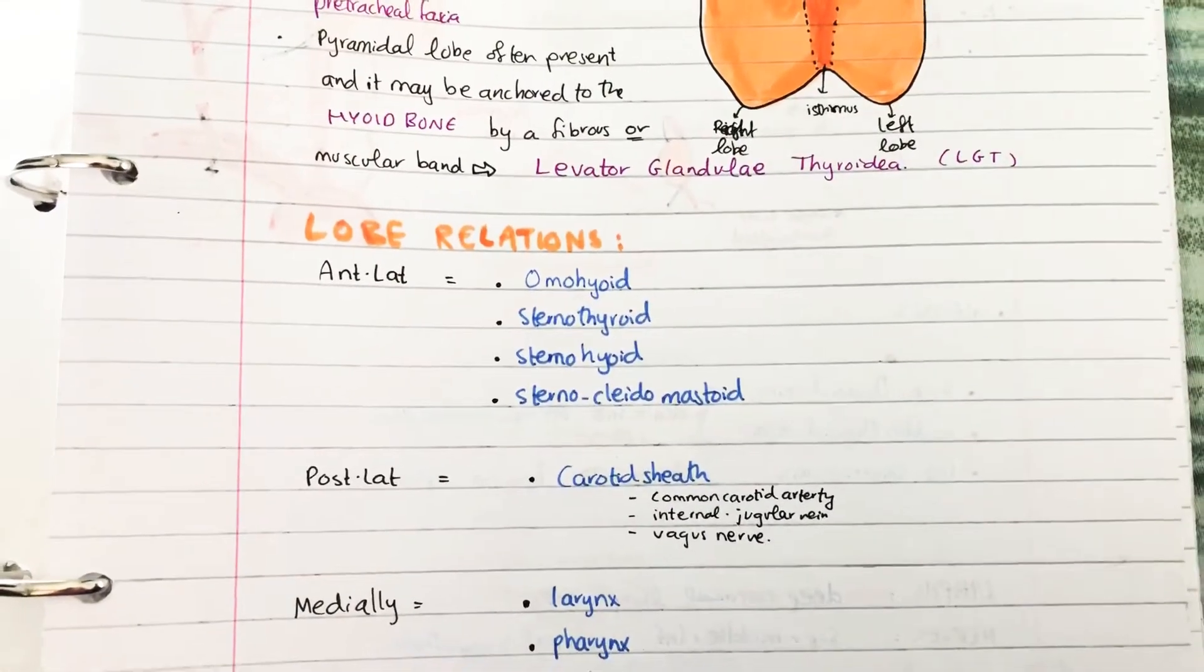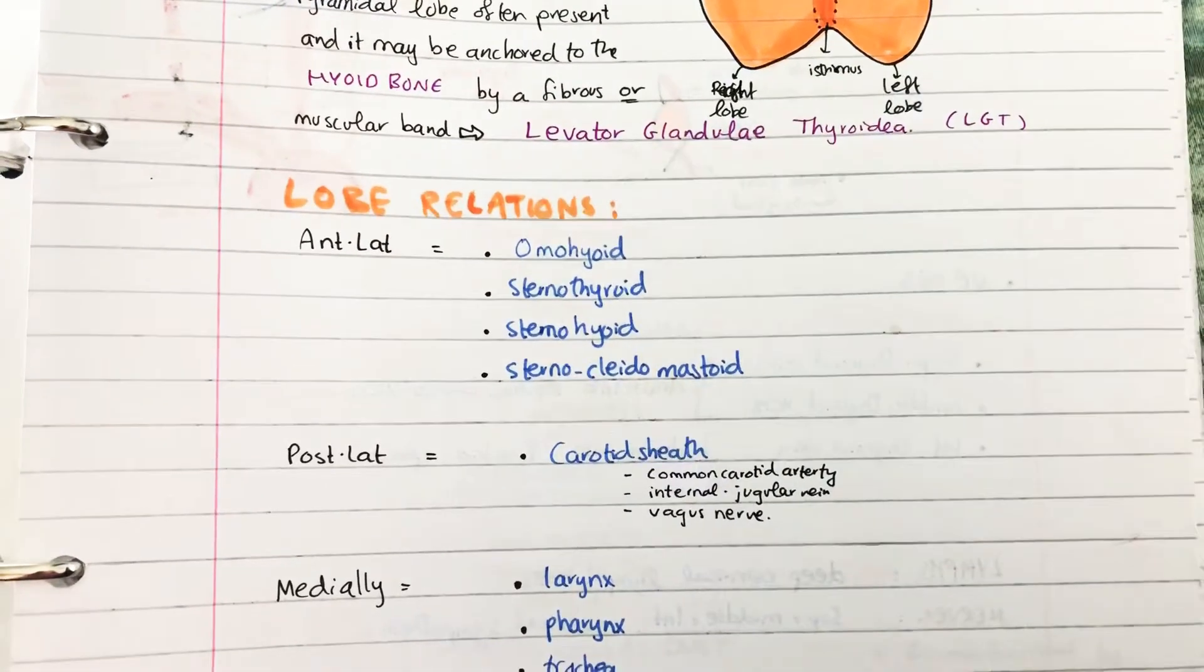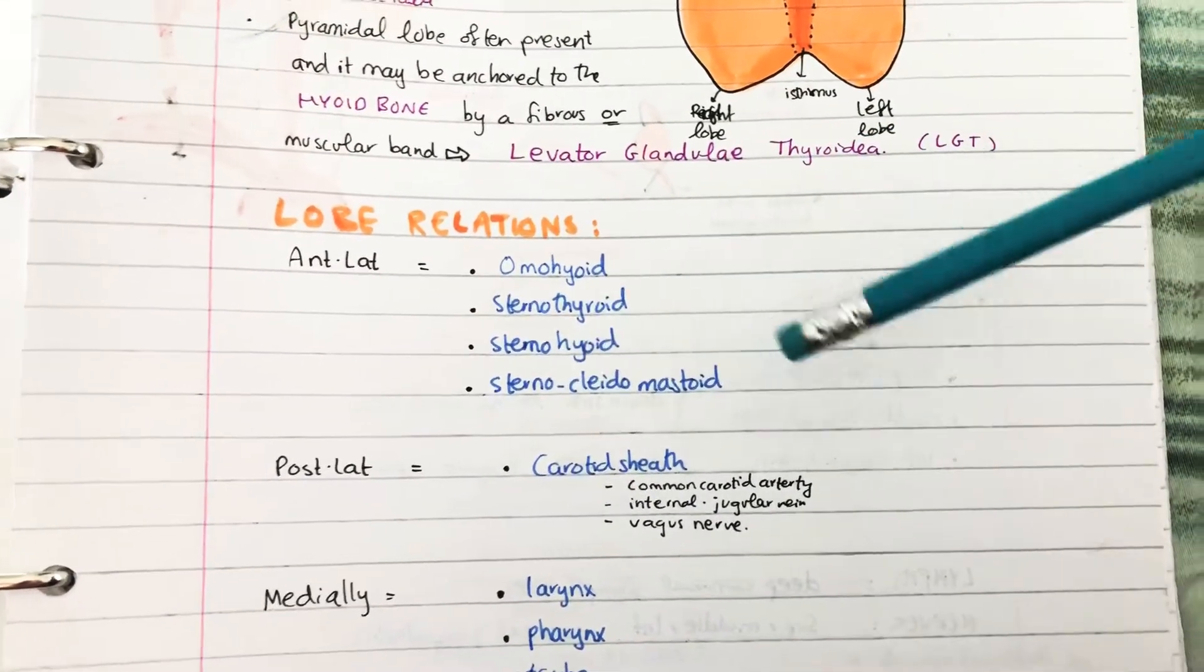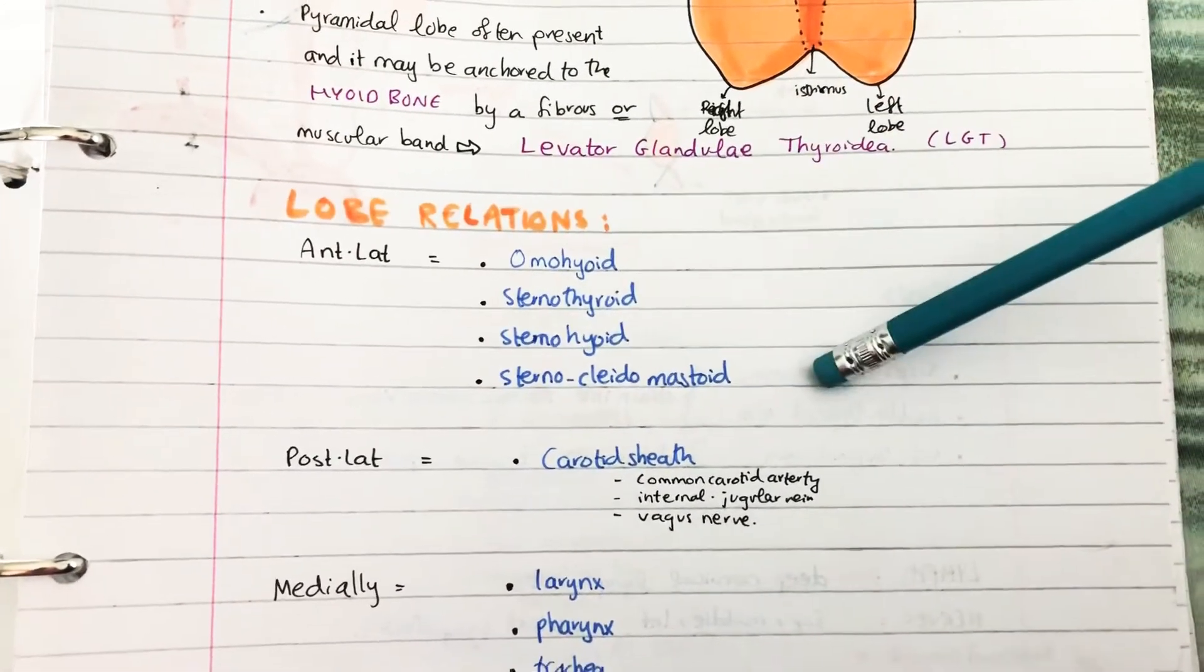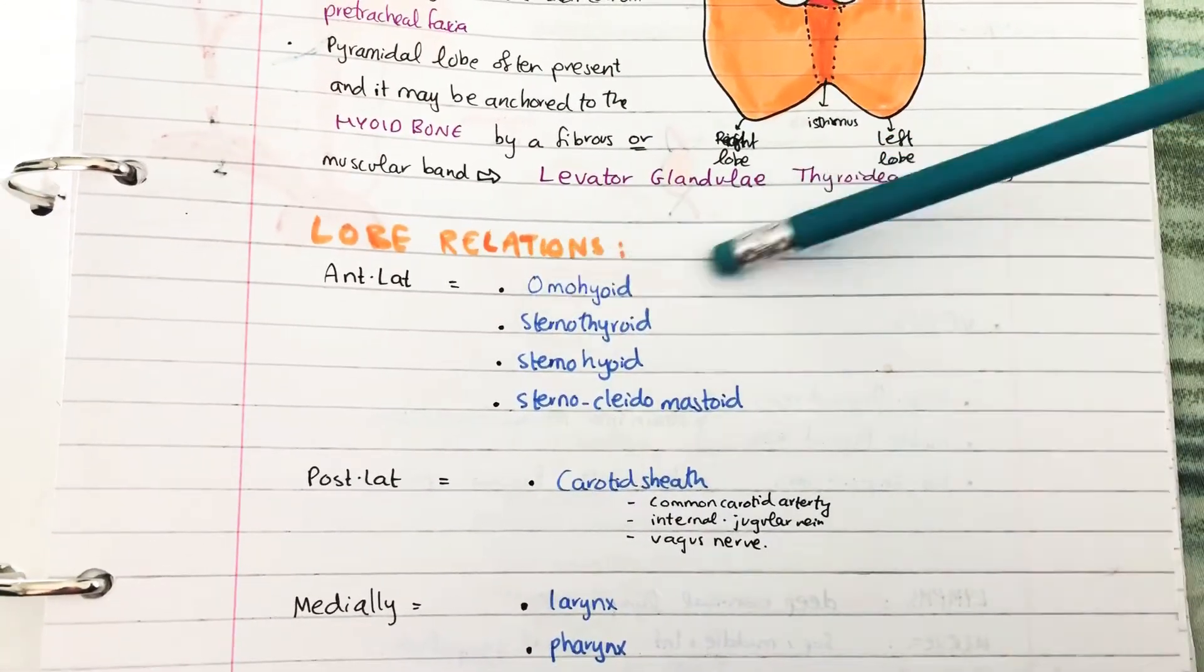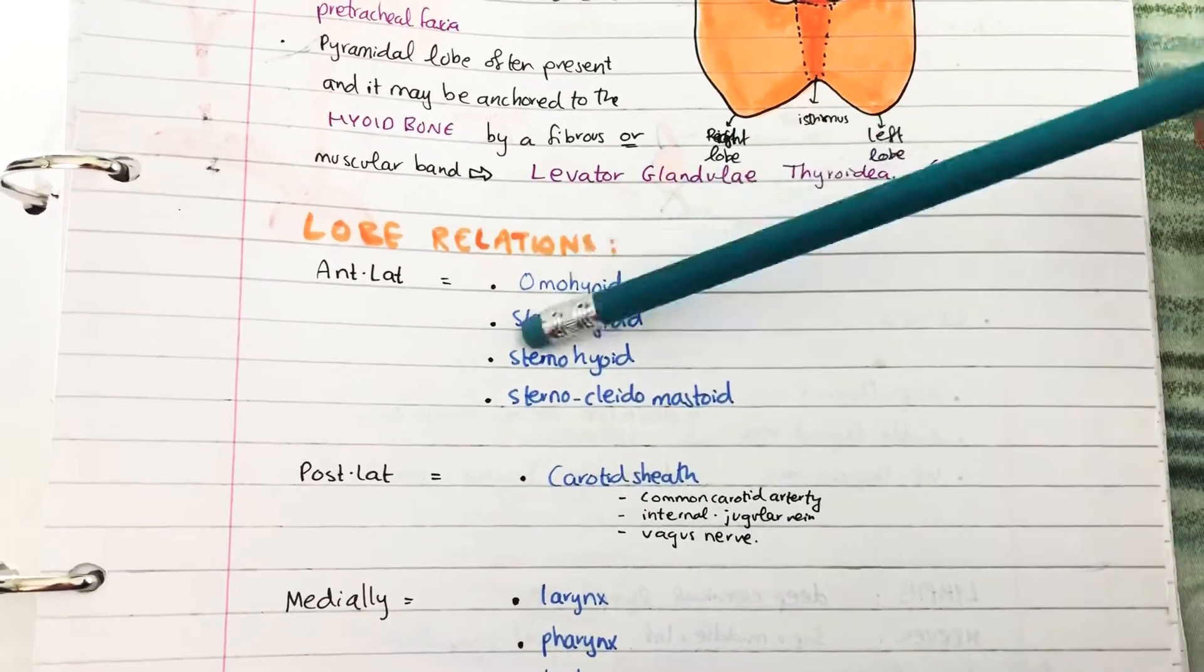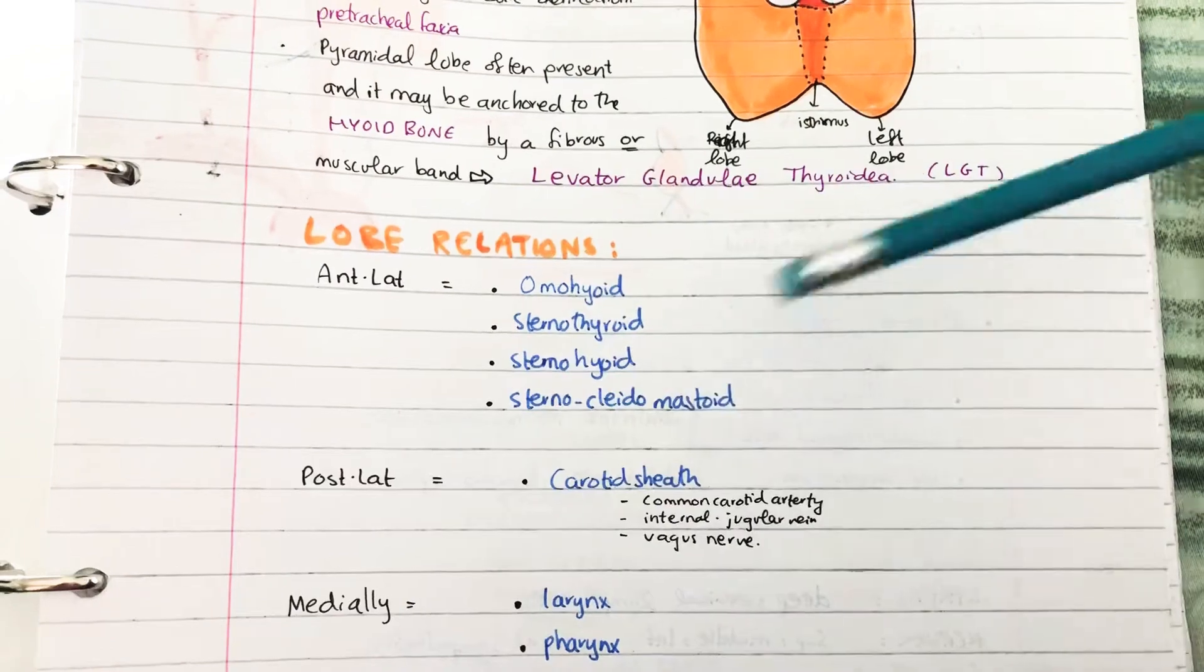So the lobe relations: the anterolateral relationships you have the omohyoid, the sternothyroid, the sternohyoid, and the sternocleidomastoid muscle. So omohyoid and then three sternos.